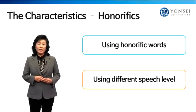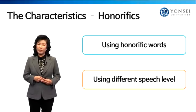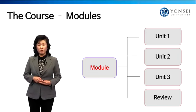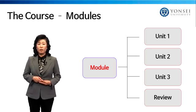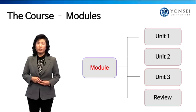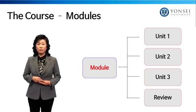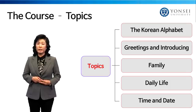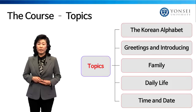Understanding such characteristics about the language will be beneficial before studying Korean. Regarding the structure of this course, it consists of five individual modules and each module is made up of four units. The fourth unit in every module is a review session to go over all the things learned in the previous three units. Each module covers topics including Korean alphabet Hangul, greetings, family, daily life, time and date, and so on.